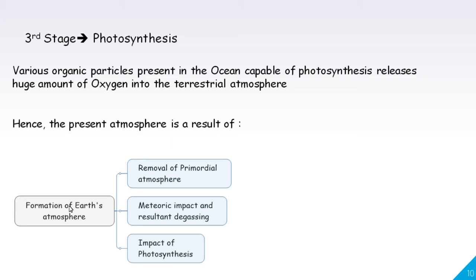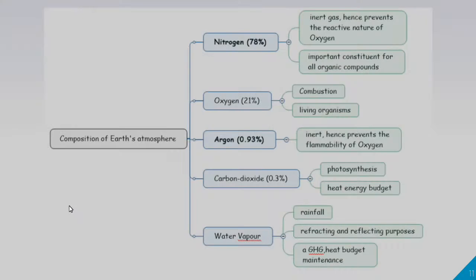Removal of the primordial atmosphere involved hydrogen and helium being lost due to solar and sun's radiation, meteoric impact and resultant de-gassing, and the impact of photosynthesis. Now, the composition of the atmosphere: nitrogen is 78%, oxygen is 21%, and carbon dioxide is about 0.03%.